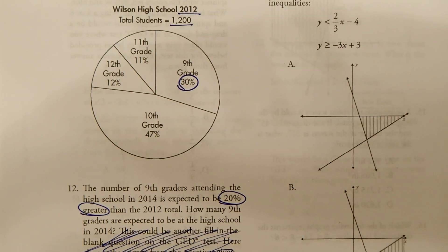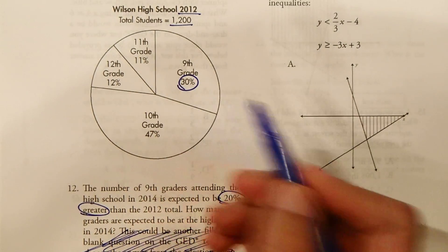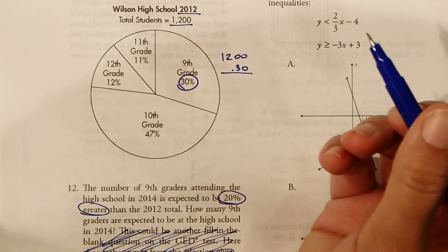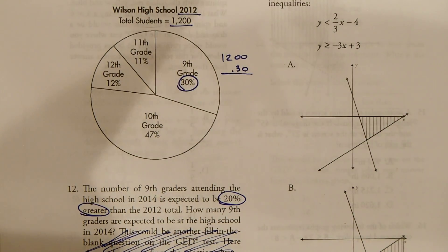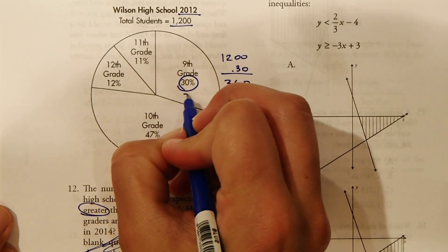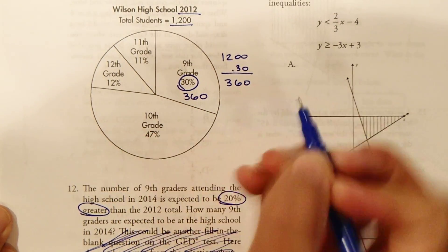So in order to find what number ninth grade represents, we need to find 30% of 1,200 by multiplying times 0.30. So 1,200 times 0.30 equals 360. So there's currently, or not currently, but in the year 2012, there were 360 students.